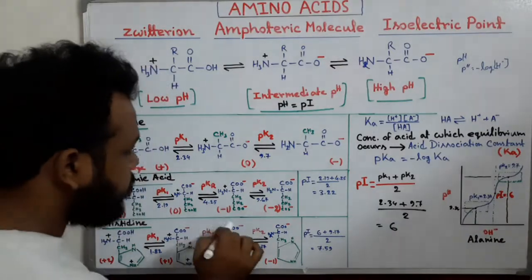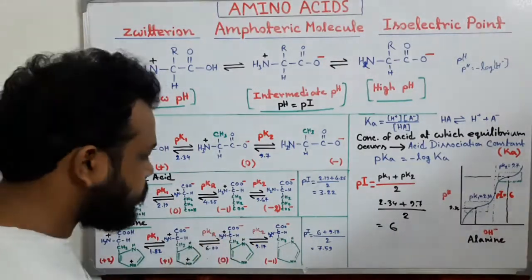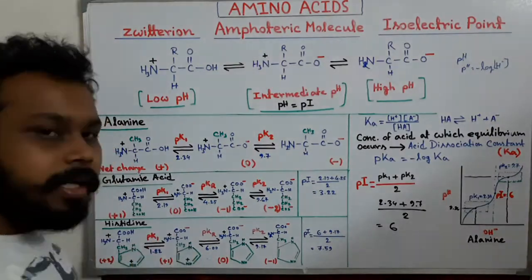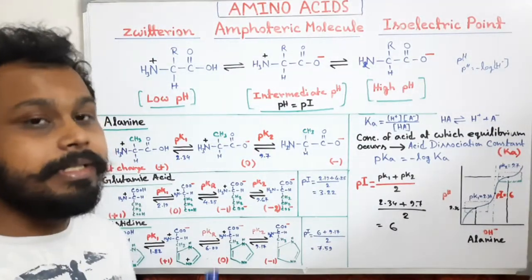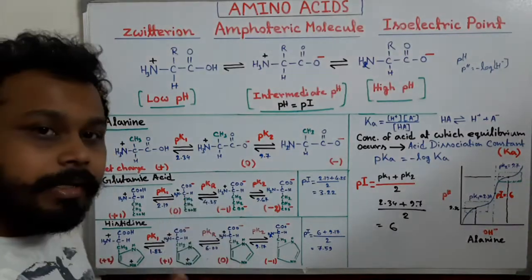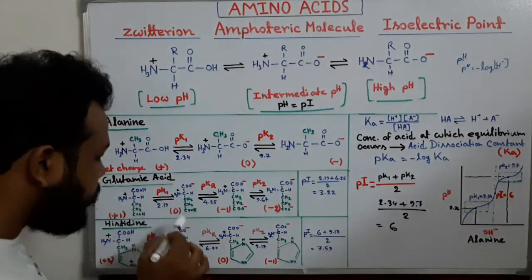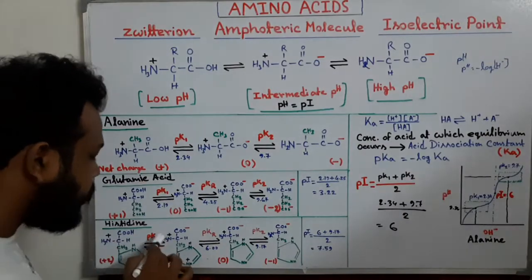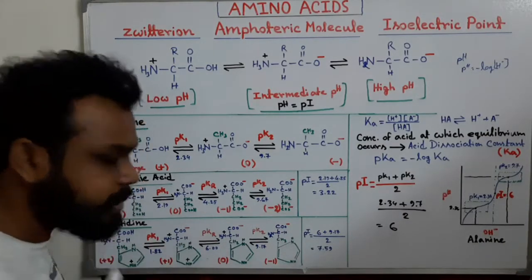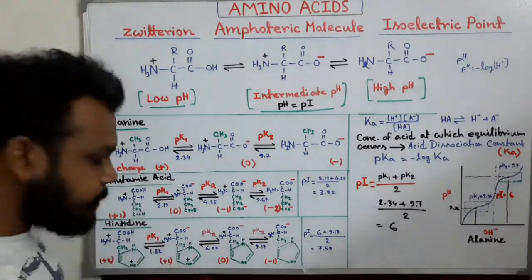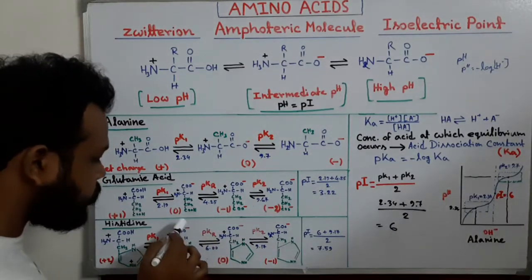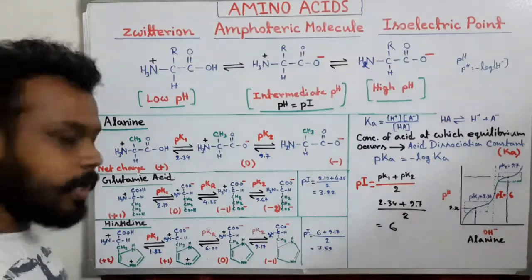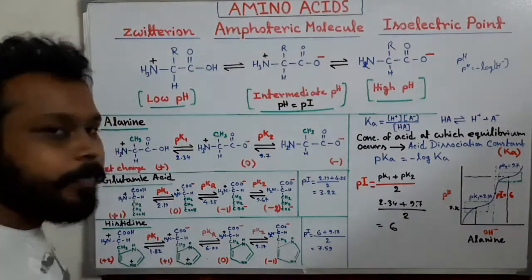Finally, the hydrogen is released from the NH3+ group, producing the −1 structure. It is important to note that for other positively charged amino acids like lysine and arginine, hydrogen is released first from the COOH group, then from the NH3+ group, then from the side chain. But histidine is an exception: first COOH, then the side chain, then the NH3+ group.